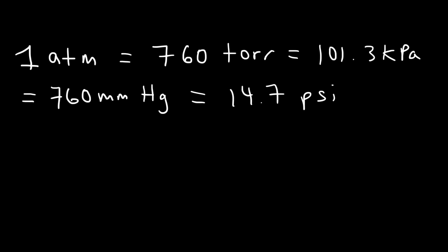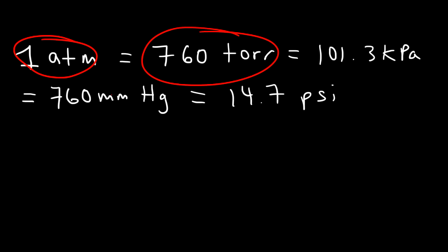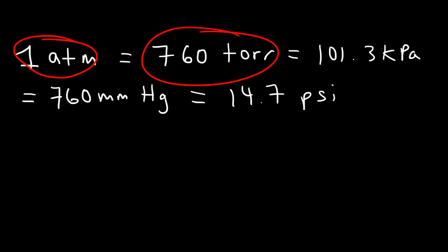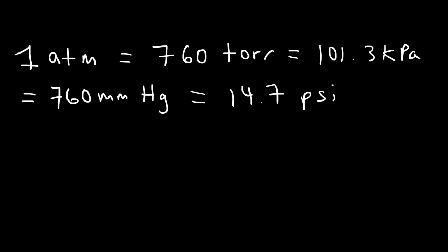Now, in chemistry, the most common units you'll see are ATM, torr, and millimeters of mercury. Occasionally, you might see the others like kilopascals and PSI, but those three are more common.